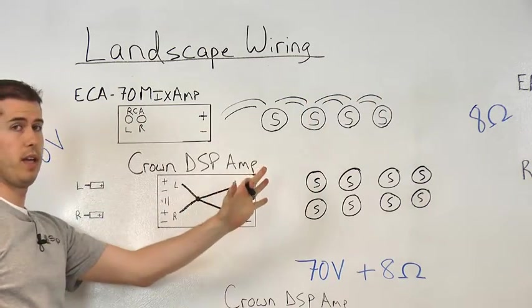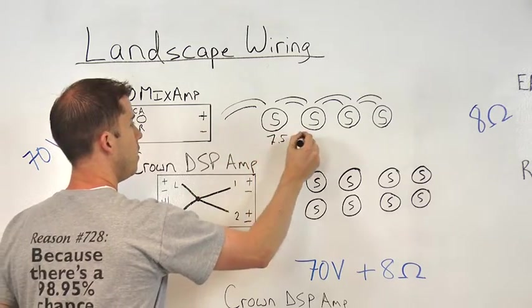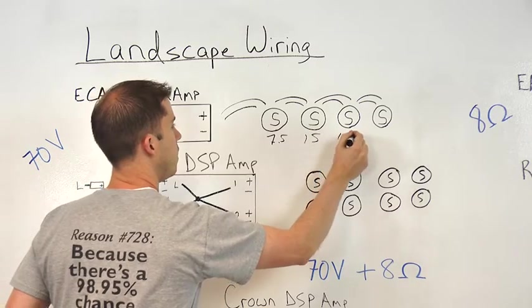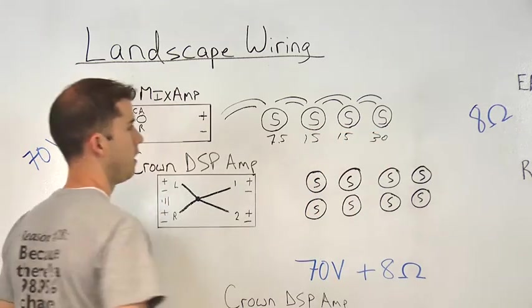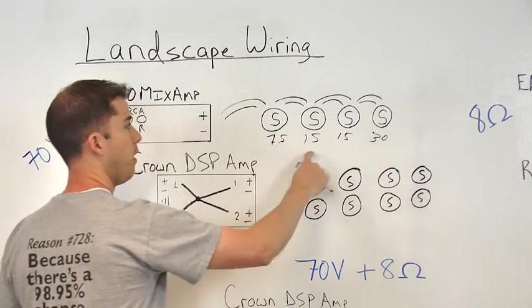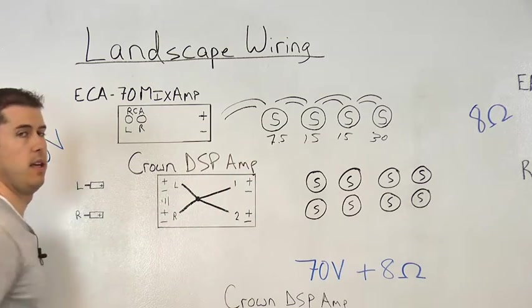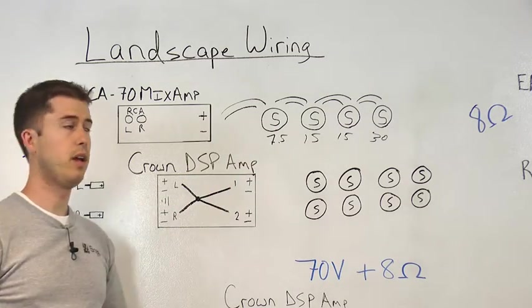Another really cool thing about our landscape speakers is the fact that the tap settings are built right in. So you can adjust each tap setting wattage based on the listening position. Just make sure that whatever you set up, the sum total in addition to the line loss is less than the power handling capability of the amplifier.